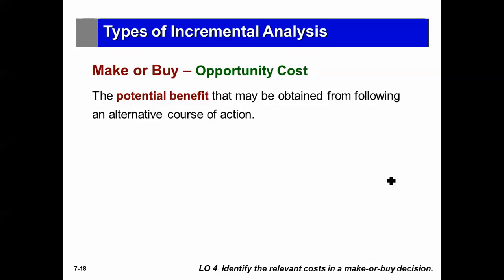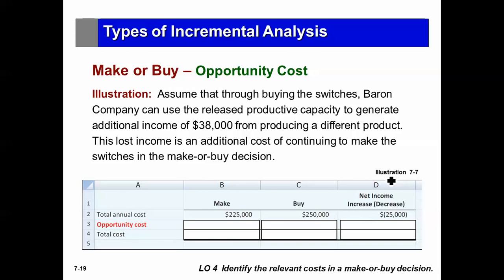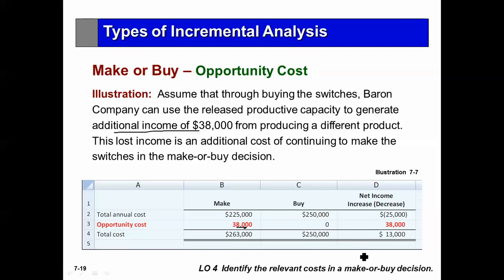There's an opportunity cost here. If I stop manufacturing, I have empty space, and I can use that empty space to earn revenue. In this case, I can generate $38,000 in additional income by producing a different product. That becomes relevant under the make alternative — if I continue to make, I forego the opportunity of earning that revenue, so it becomes part of the cost of manufacturing. Now the buy alternative looks better: I pay $250,000 but earn $38,000, making it more favorable.